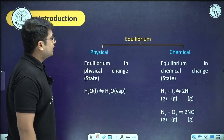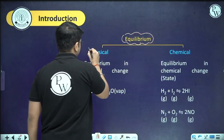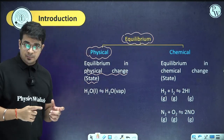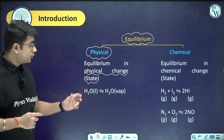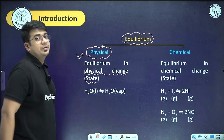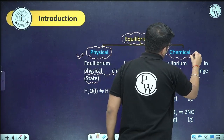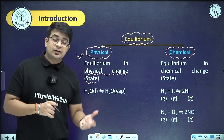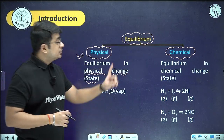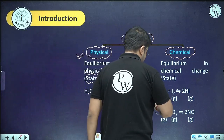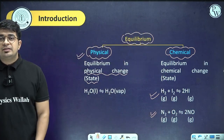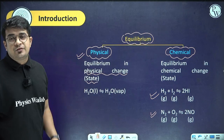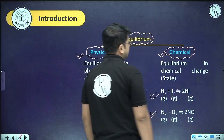Equilibrium can be divided into two parts. First is physical equilibrium, which involves phase changes — solid to liquid, liquid to gas, gas to solid. Second is chemical equilibrium, which is equilibrium in chemical reactions. When equilibrium is established in a chemical reaction, that is chemical equilibrium; when it occurs during phase transformations, it is physical equilibrium. We are mostly concerned about chemical equilibrium.